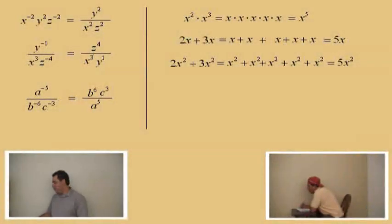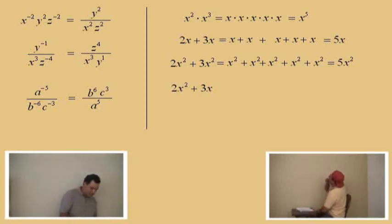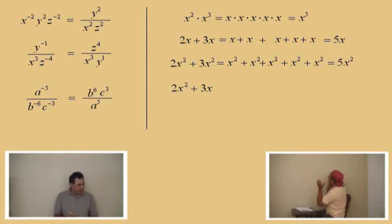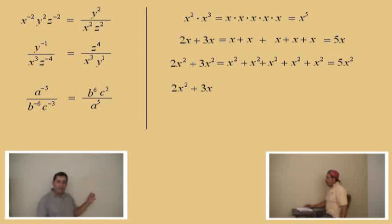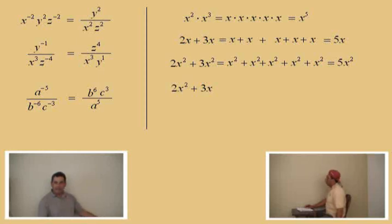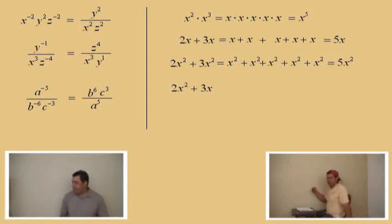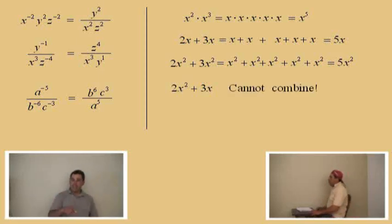Be careful with this one. Here we go: 2x squared plus 3x. Charlie, what do you think? You cannot combine these because here you have x squareds and you have x's. It's like saying if you have two apples and somebody gives you three pears — what do you get? Do you have five apple-pears? You can't combine these; they are not like terms.